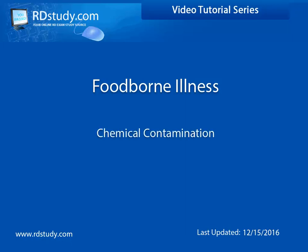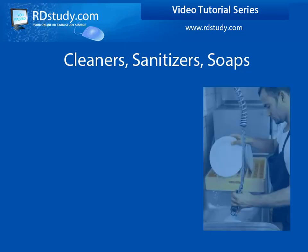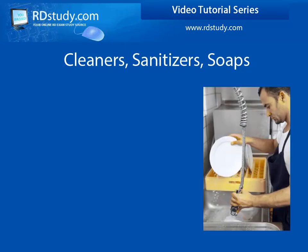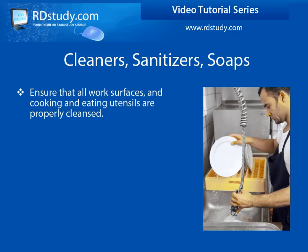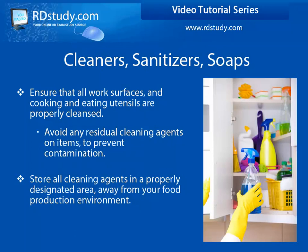The next item to be discussed when it comes to foodborne illness is chemical contamination, which can occur from a variety of sources. One of the first items on this list are the sanitizers, soaps, and cleaning agents that you use on your utensils and food preparation surfaces. It is critical that you remove these chemicals from these surfaces completely so that they do not inadvertently end up in the food you are serving, and that you also store them in a safe area away from your food production environment.